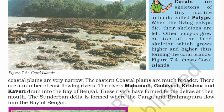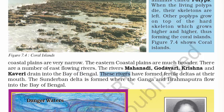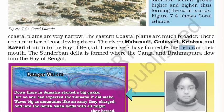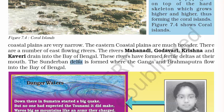Some of the east-flowing rivers in India are Mahanadi, Godavari, Krishna, and Kaveri — they drain into the Bay of Bengal and are called east-flowing rivers. These rivers have formed fertile deltas at their mouths. The Sundarbans delta is formed where the Ganga and Brahmaputra flow into the Bay of Bengal. A delta is a landform formed near the end of a river where it meets the ocean, created by the continuous movement of soil by the flowing river.